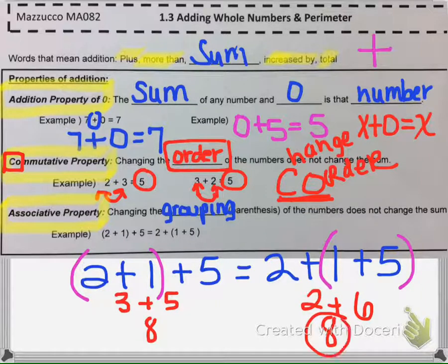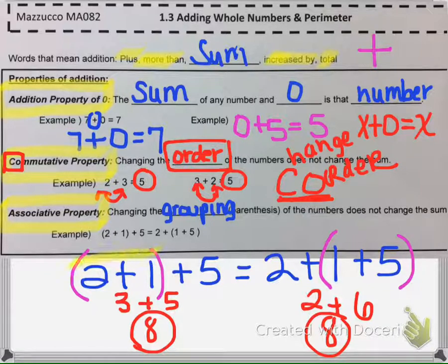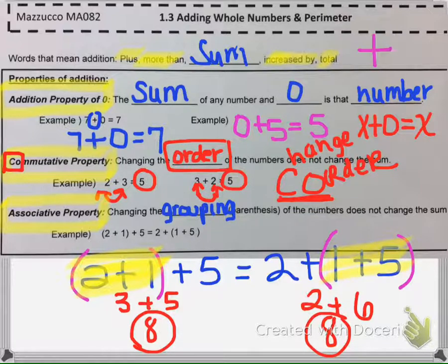But we could have also done the same exact problem. Instead, we could have added the 1 and the 5 together. 1 + 5 is 6, then add 2 to it to get 8. So the associative property says that when you're adding multiple numbers, you can group in parentheses whichever two numbers you want, and you're still going to get the same sum in the end.